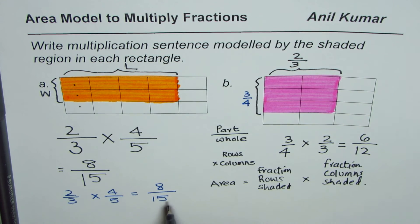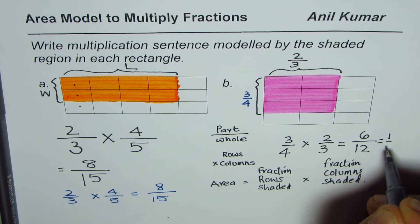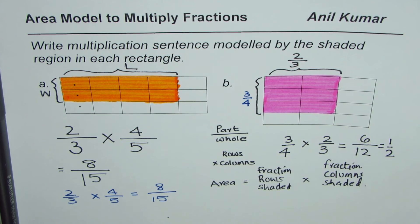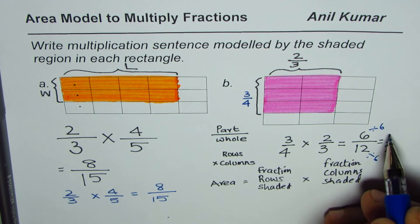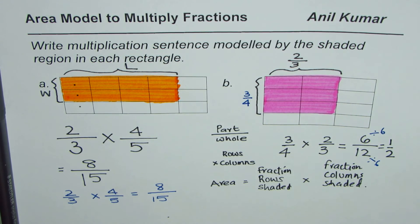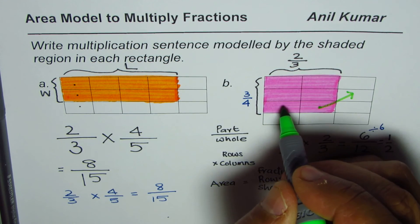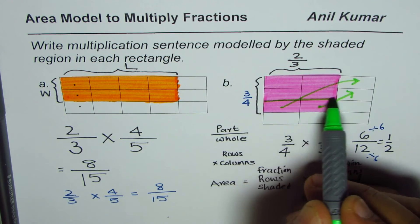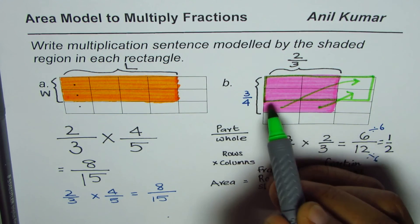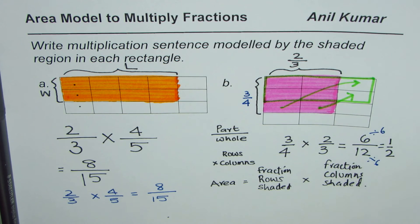In this case we can simplify 6/12 — dividing both by 6, we get 1/2. So 6 divided by 6 is 1, and 12 divided by 6 is 2, giving us one-half. To see this visually, if you rearrange the shaded portions, you would have shaded exactly half of the rectangle. So 6/12 is equivalent to 1/2.